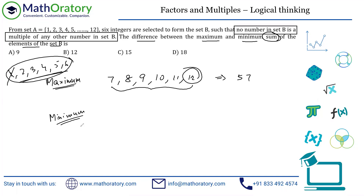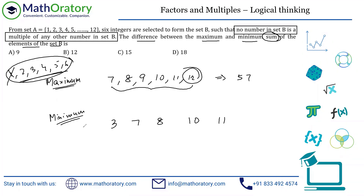Trying 3: exclude 12 and include 3, then also exclude 9 (multiple of 3). Remaining set has 7, 8, 10, 11. We need one more number, but 4 is blocked (8 is there), 5 is blocked (10 is there), and 6 is a multiple of 3. So we still cannot form six valid numbers — 3 also cannot be introduced.